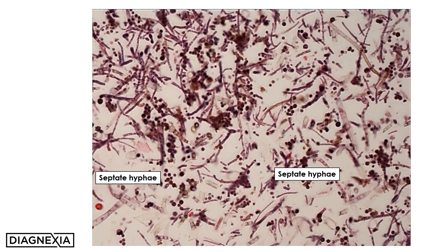The hyphal forms are clearly septate and vary in size and shape. The more degenerate ones appear slightly bloated and devoid of septae. The spores are also variable in size and shape and deeply pigmented.